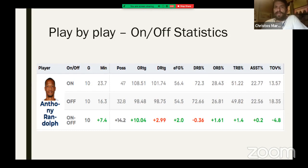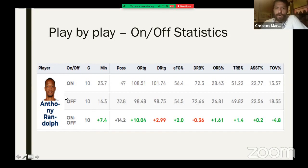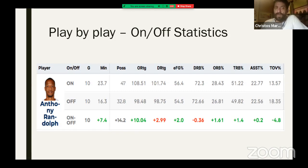The first play-by-play statistic we like to see is on-off statistics. On-off statistics show two things: what the team was doing while a specific player — Anthony Randolph — was on the court, and what the team was doing when he was off the court. When Randolph was on the court, his team averaged 10 more points in offensive rating than when he was off the floor. That means this player helped his teammates play good offense, and this is something we need to know when evaluating a player.